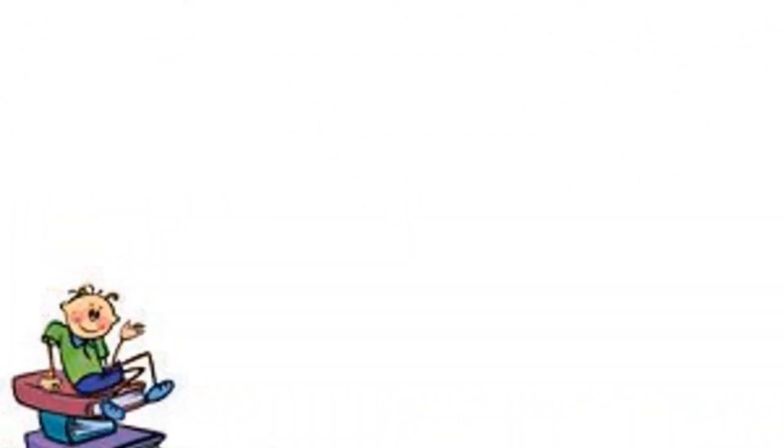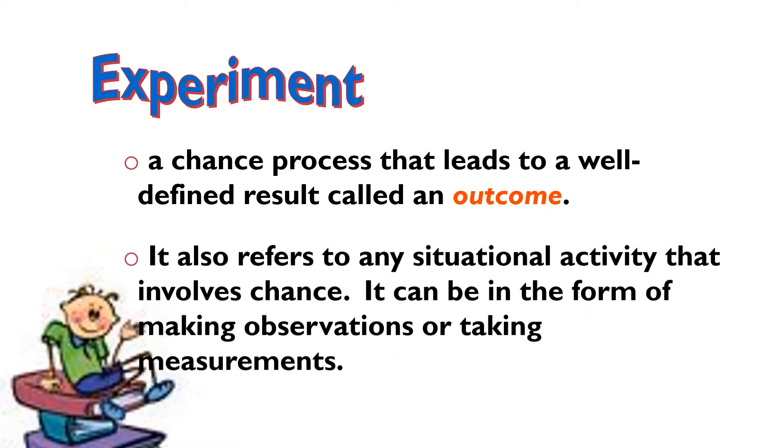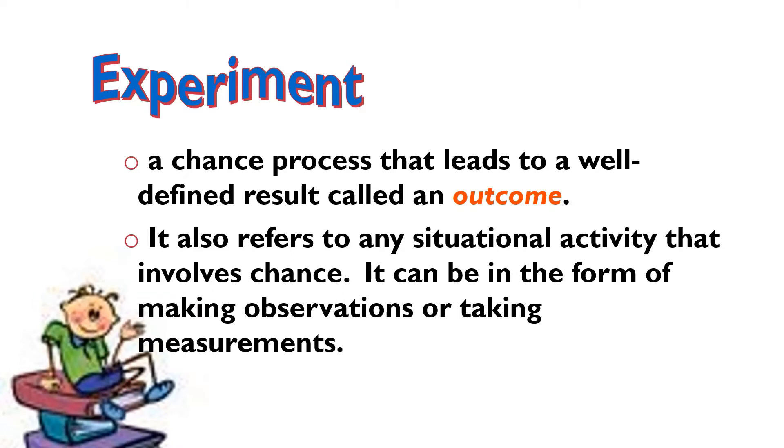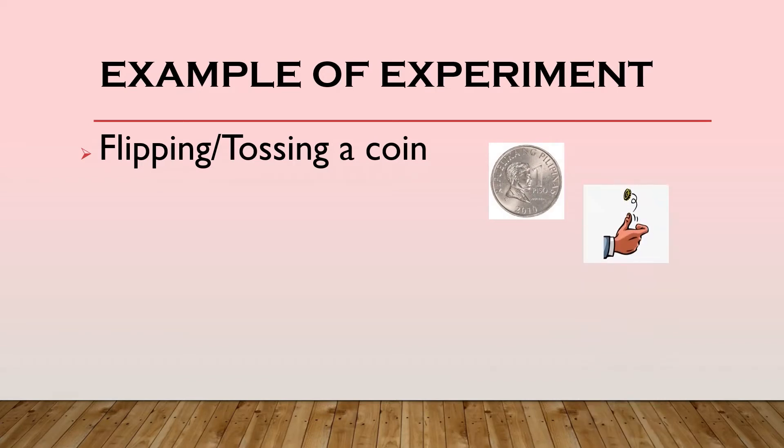Here are some terminologies used in the basic concepts of probability. We have first the experiment. When we say experiment, it is a chance process that leads to a well-defined result called an outcome. Or, it also refers to any situational activity that involves chance. It can be in the form of making observations or taking measurements. Best examples of experiment are flipping or tossing a coin.